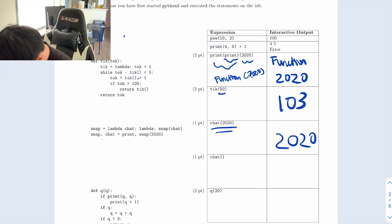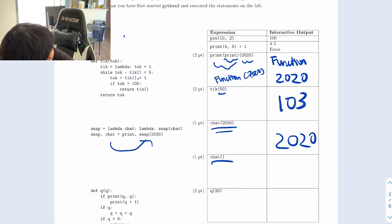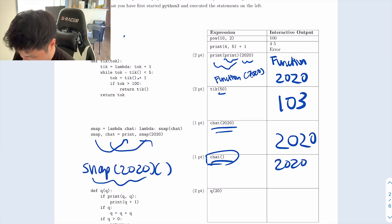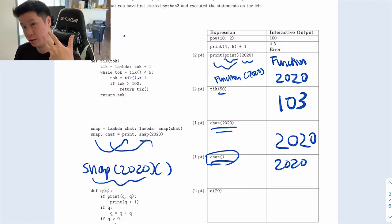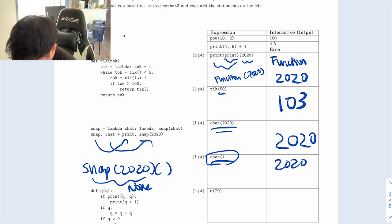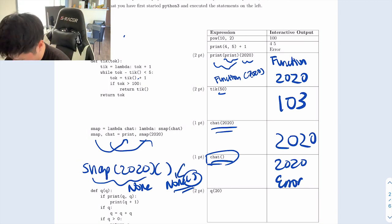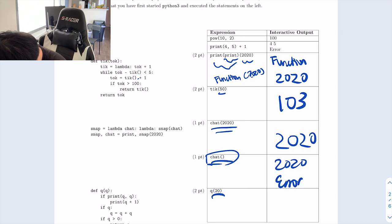So we print 2020. Now we call chat, which we defined as snap(2020), so it's like calling snap(2020) again — we print 2020 again. But what does print(2020) return? It returns None, because print just prints the value on the screen and returns None. Then we're calling None() with parentheses, which means it's a function call, but None is not defined as a function, so we get an error.